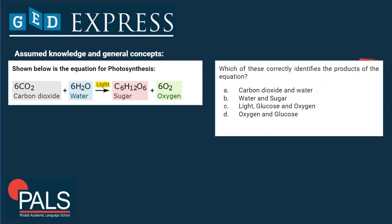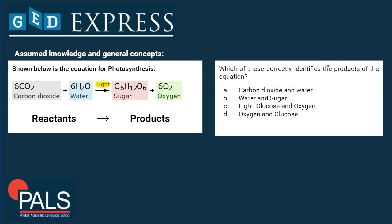They ask about the products, and this is again assumed knowledge — you need to know the general structure of a chemical equation. On the left side of the arrow we have the reactants, and on the right side we have the products. The reactants are the things that combine together, the molecules that chemically react with each other, and then form new molecules and new substances — in this case glucose and oxygen. So we can definitely exclude answer A, carbon dioxide and water, because water and carbon dioxide are on the reactant side. That leaves us with light, glucose and oxygen, and oxygen and glucose.